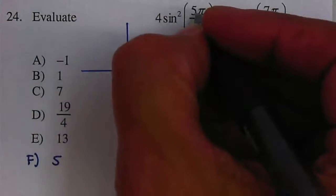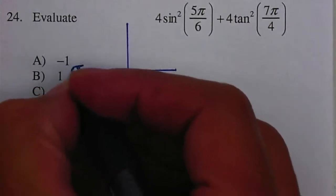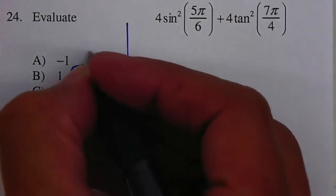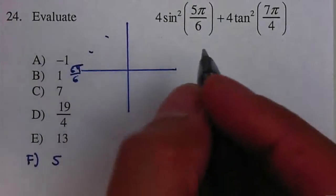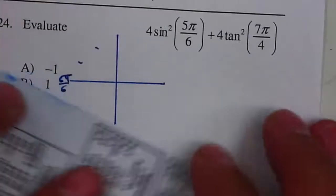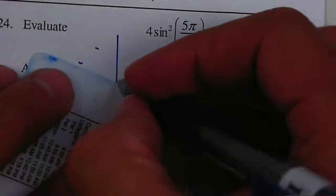So in this case 5 pi over 6, I know that this is pi, so this is 6 over 6. So 5 pi over 6 will be one-sixth less. Therefore this will be 5 pi over 6.